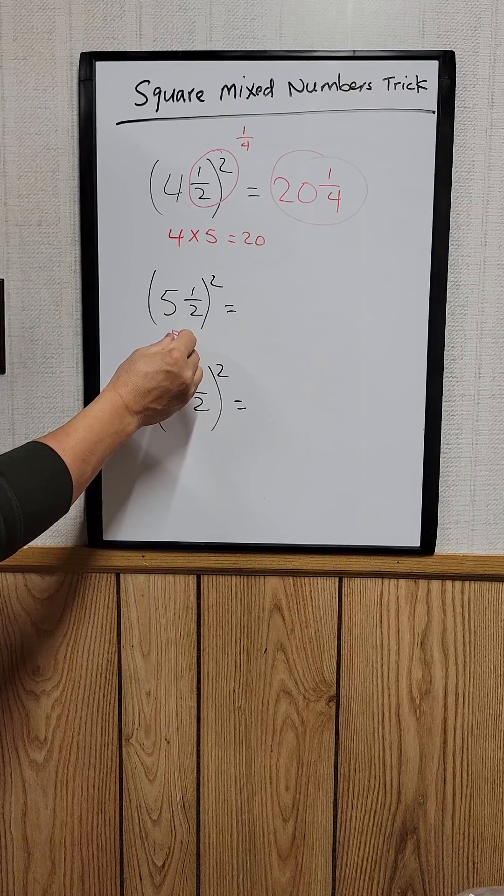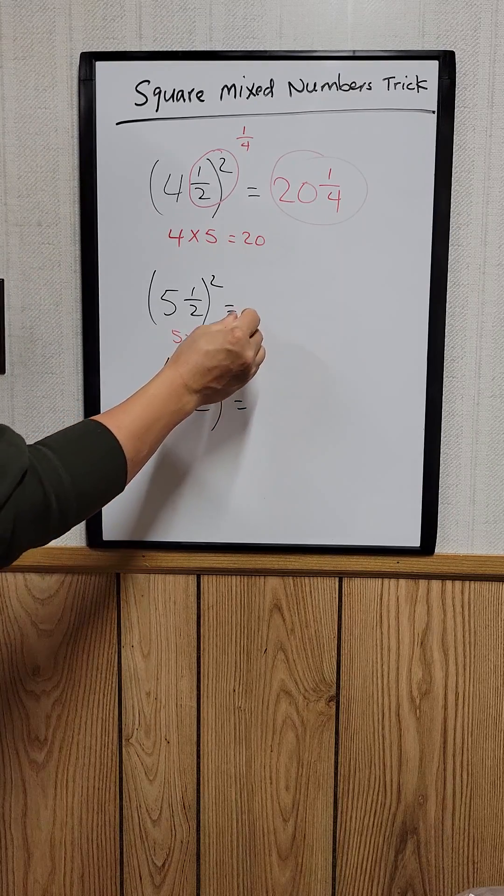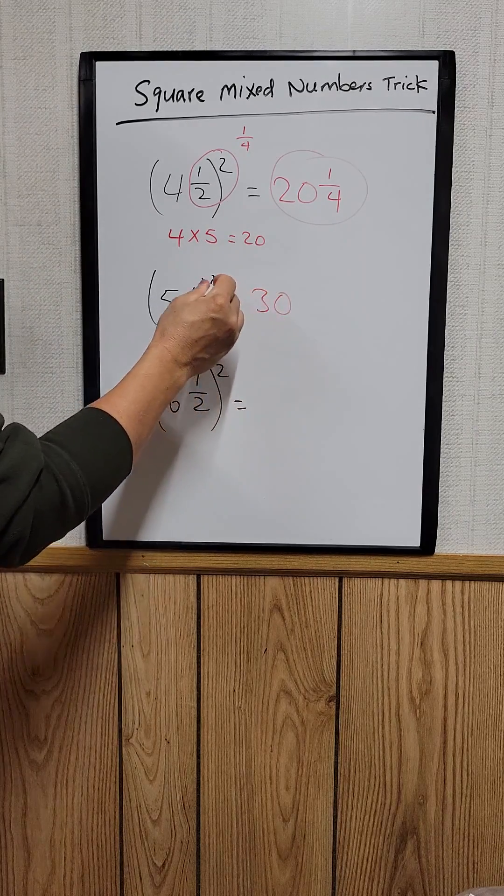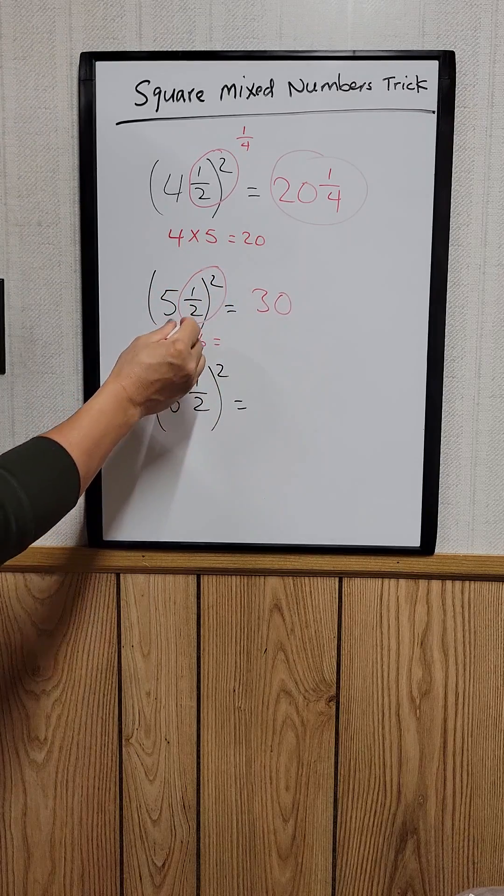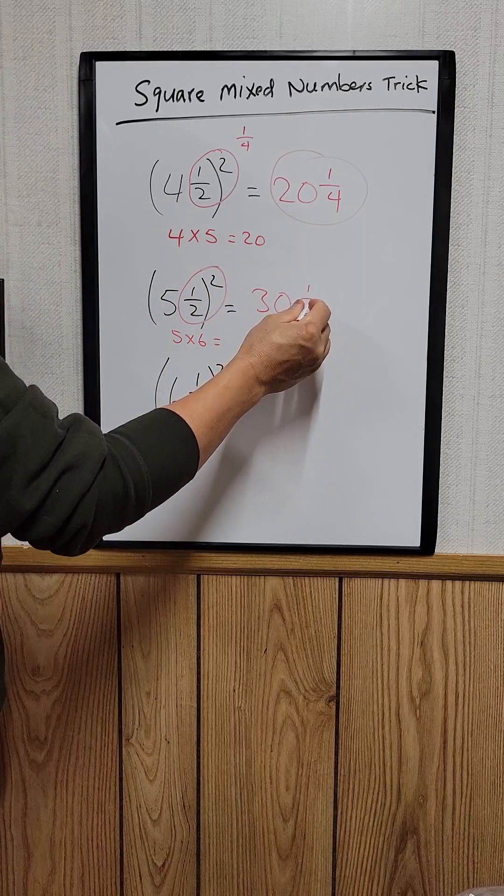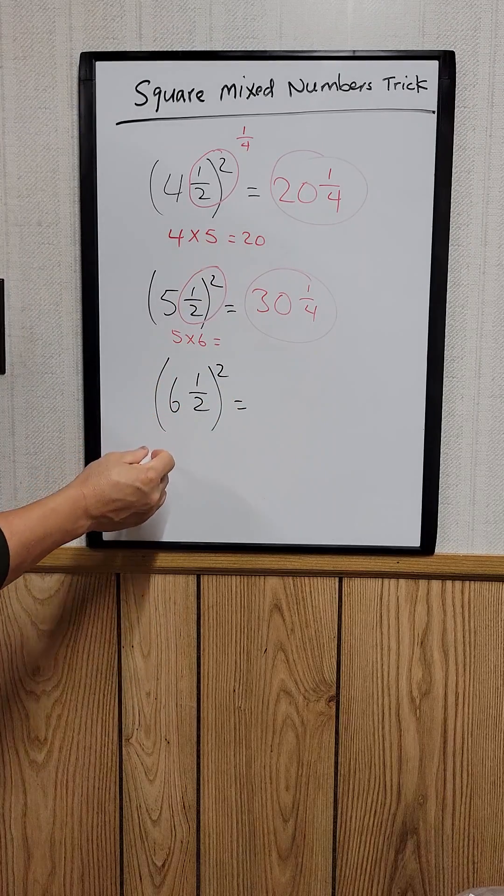Five, the next number will be six, equals thirty, and then you square this, which is equal to one-fourth. Same thing right here.